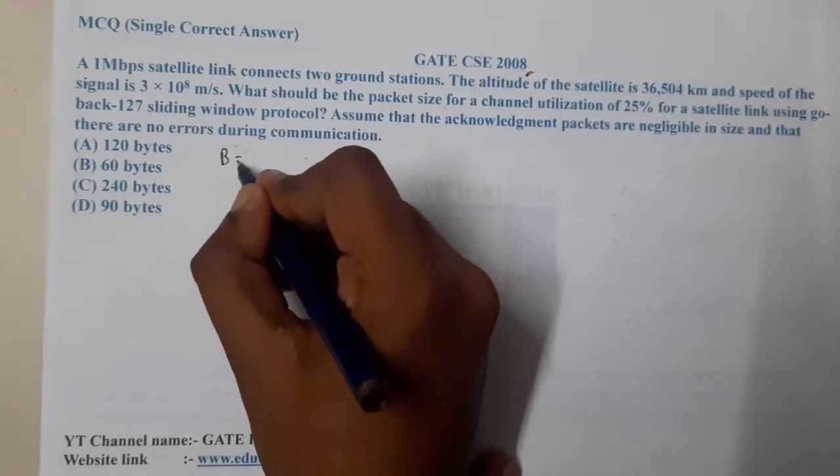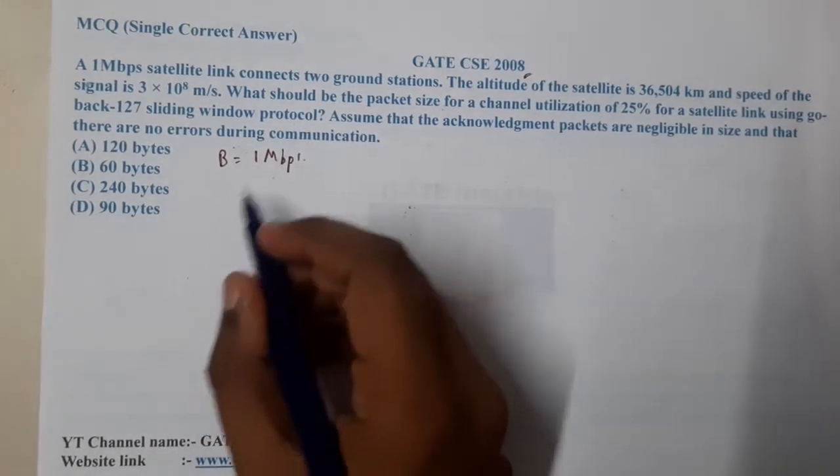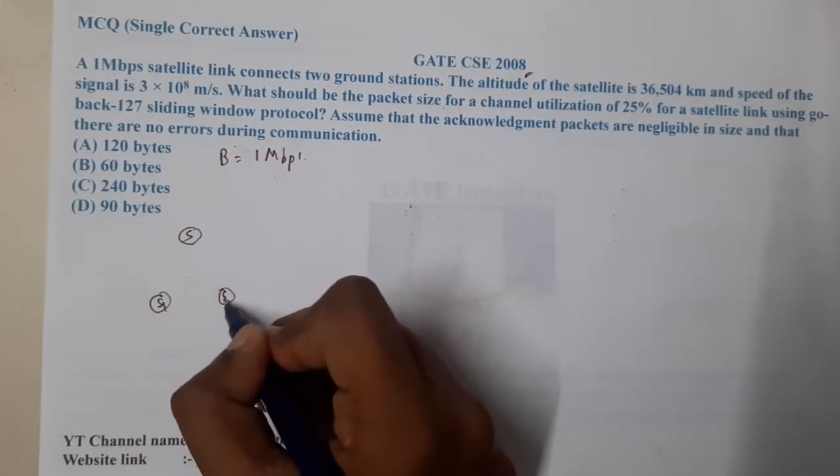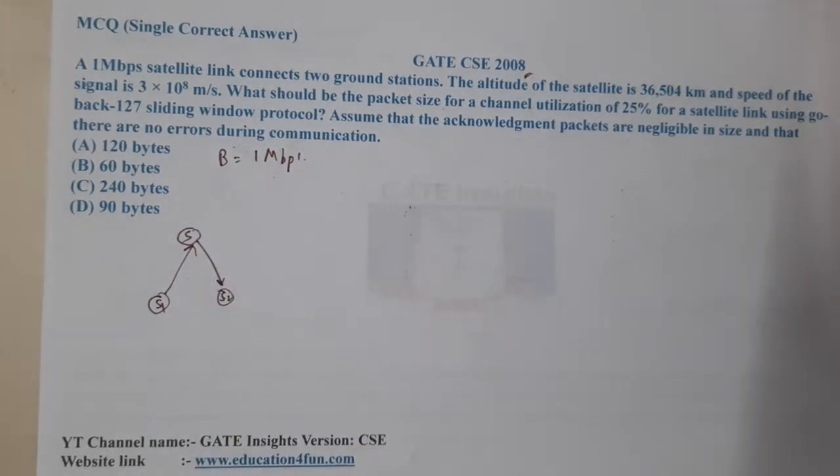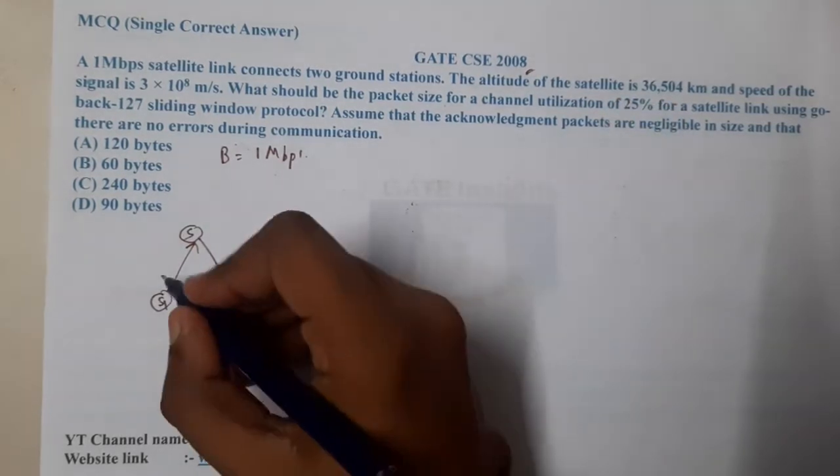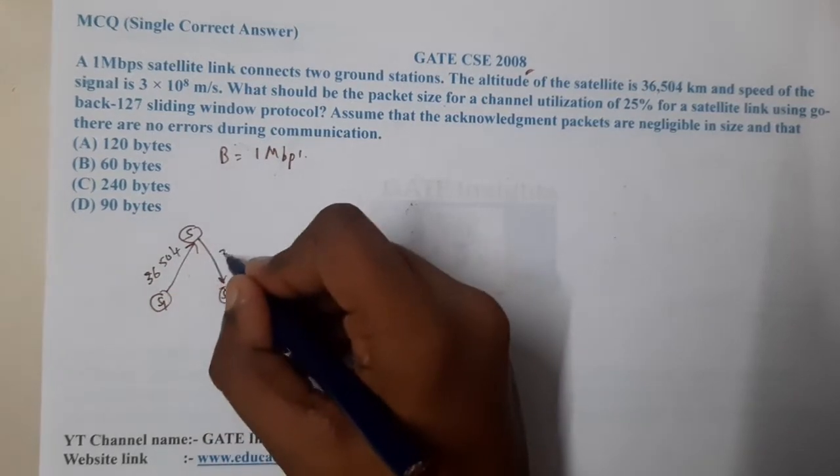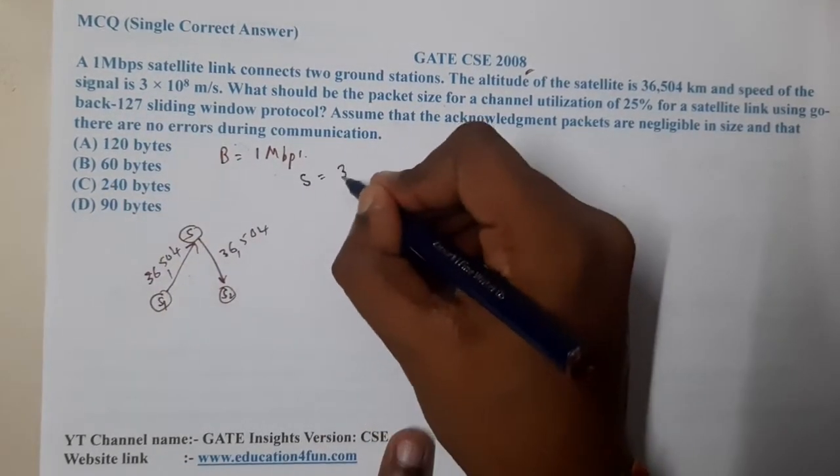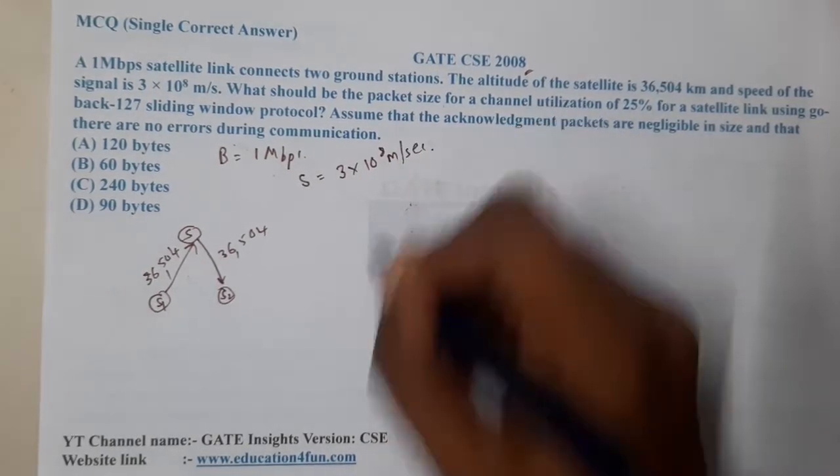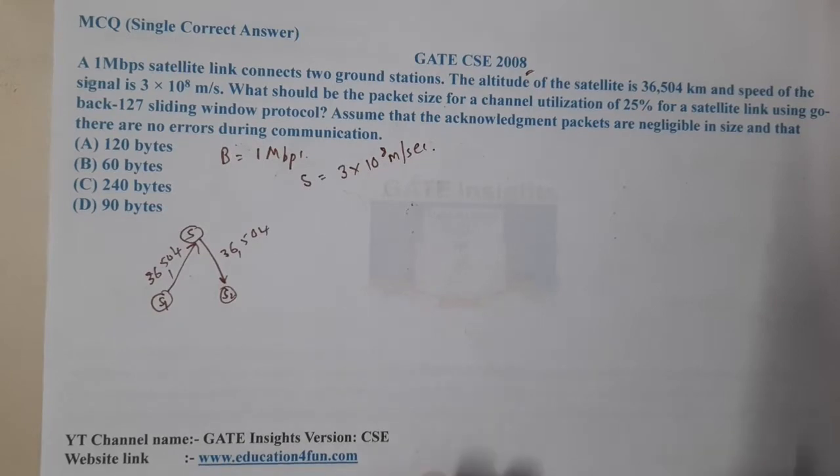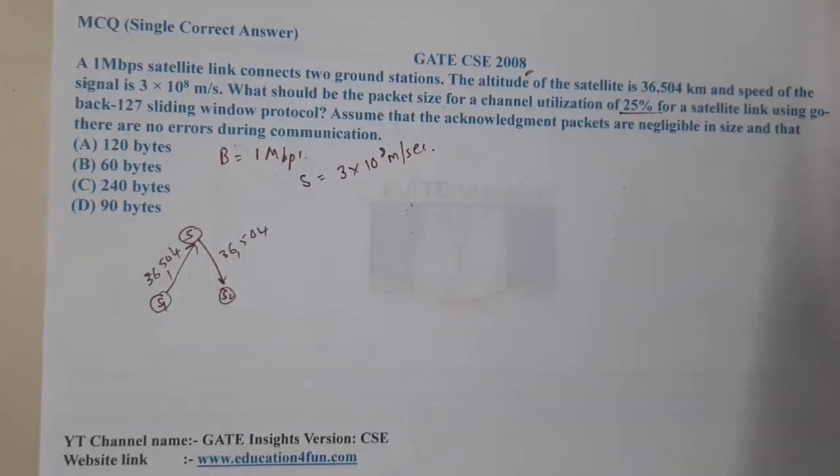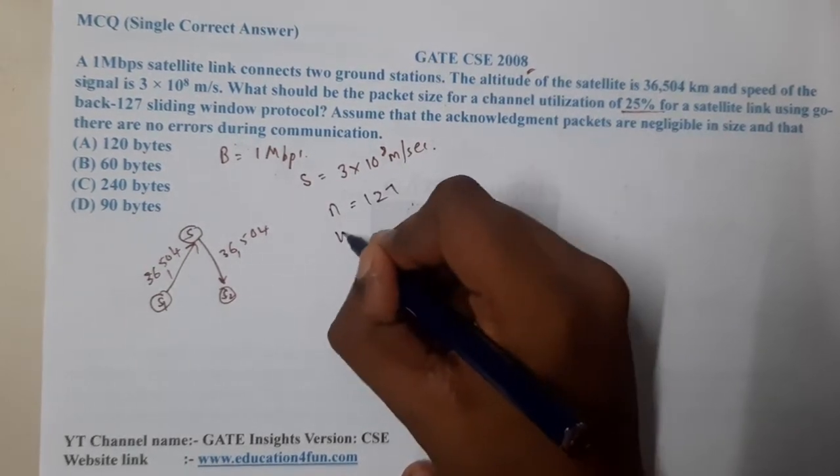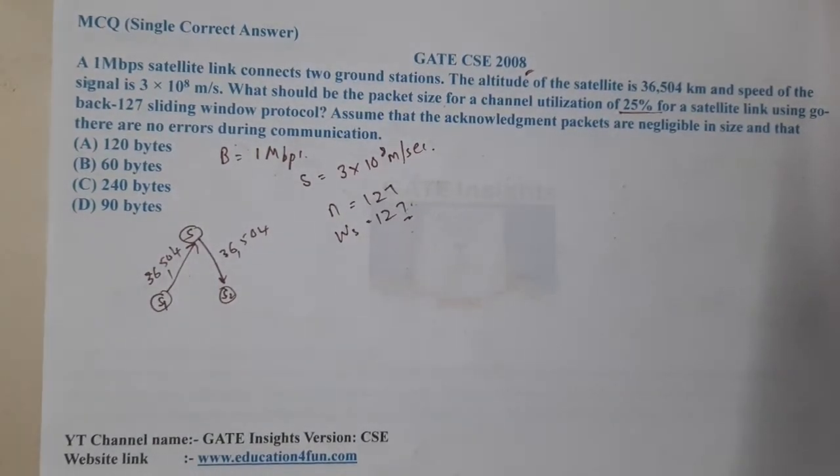The question states: A 1 Mbps satellite link connects two ground stations. The satellite acts as a mediator in between. The altitude of the satellite is 36,504 km, so the distance from station to satellite and back is 36,504 km each. The speed of the signal is 3×10^8 meters per second. What should be the packet size for a channel utilization of 25% for a satellite link using Go-Back-N with window size 127? They indirectly give the n value as 127. Assume that the acknowledgment packets are negligible in size.